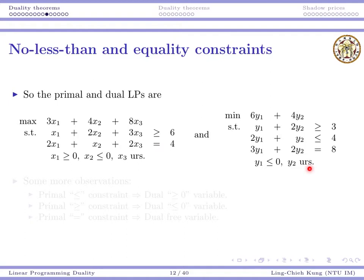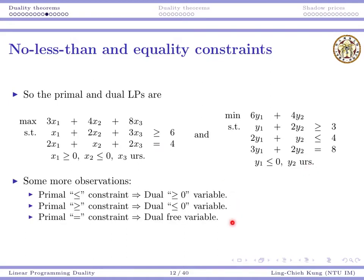This gives us the general rules. For primal less than or equal to constraints, the dual variable must be non-negative. For primal greater than or equal to constraints, the dual variable must be non-positive. And for primal equality constraints, the dual variable must be free.